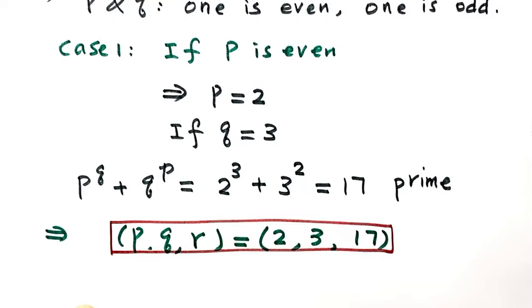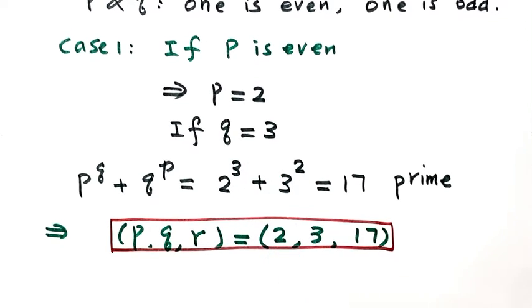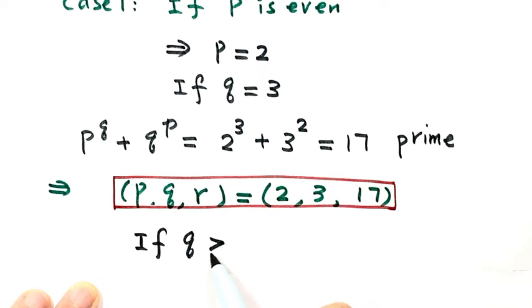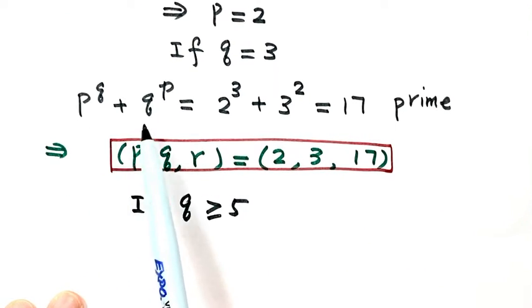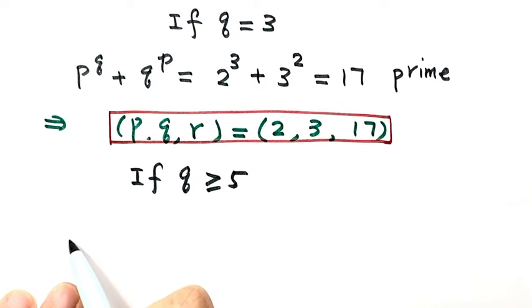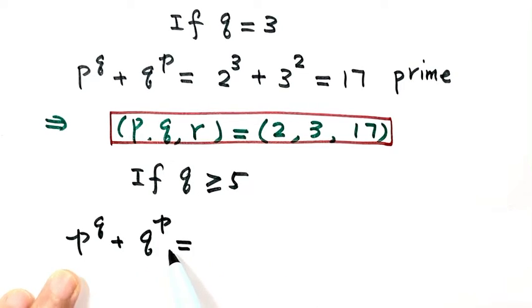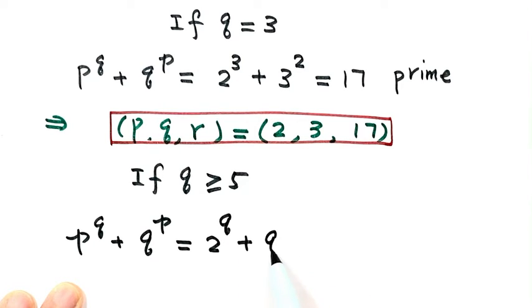Now let's consider the second sub-case: if q is greater than or equal to 5. With p = 2, the equation becomes 2^q + q².